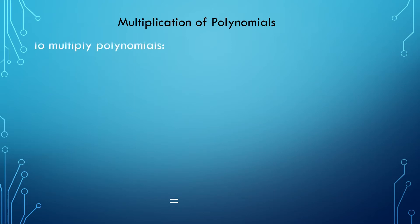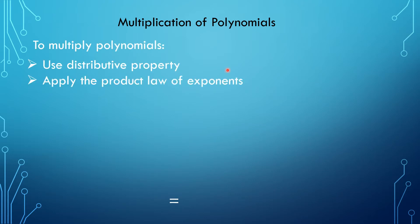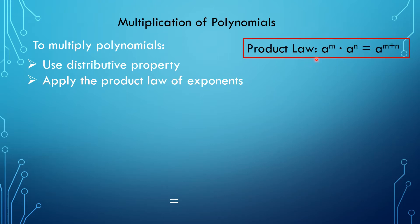To multiply polynomials, use the distributive property. Apply the product law of exponents. So let's have a review about the product law: if we are multiplying the same base, just copy the base and add the exponents. And then combine like terms. When we say like terms, they have the same variables or letters and the same exponent.